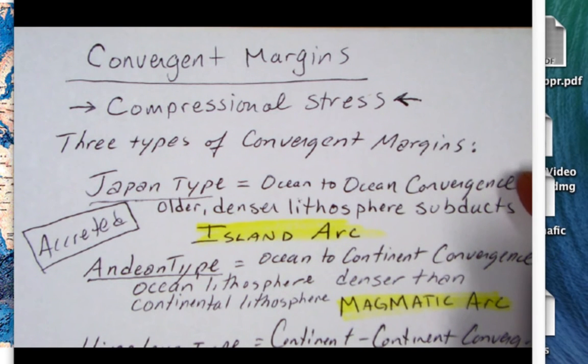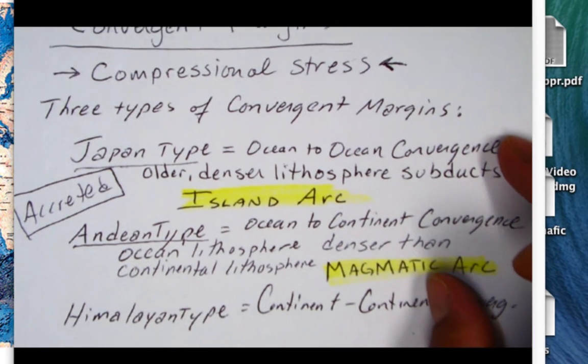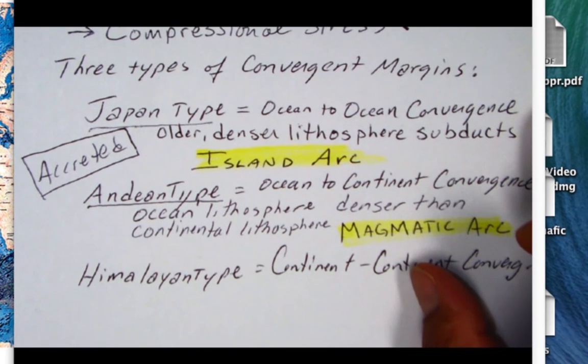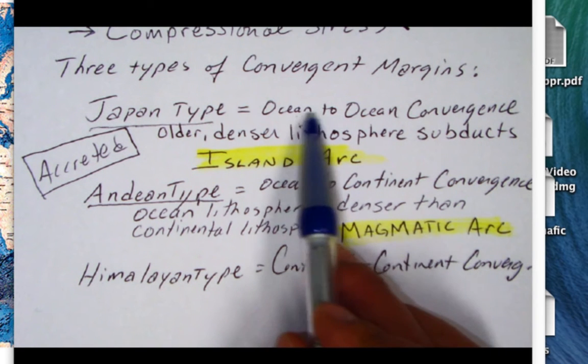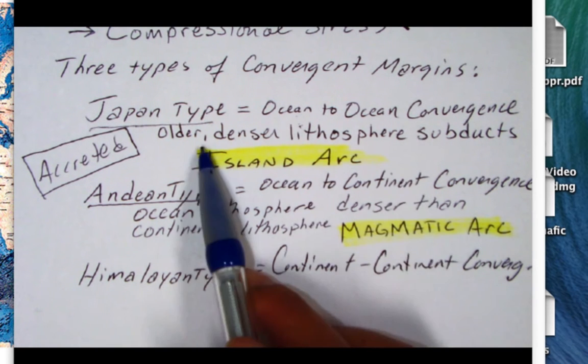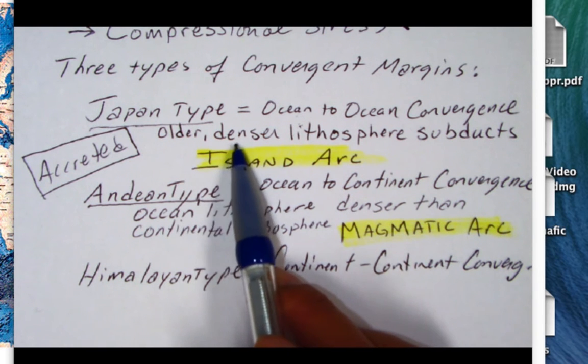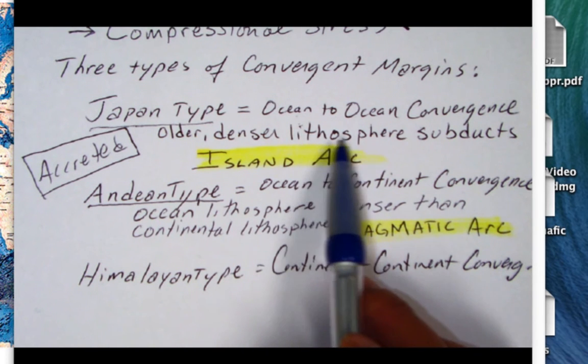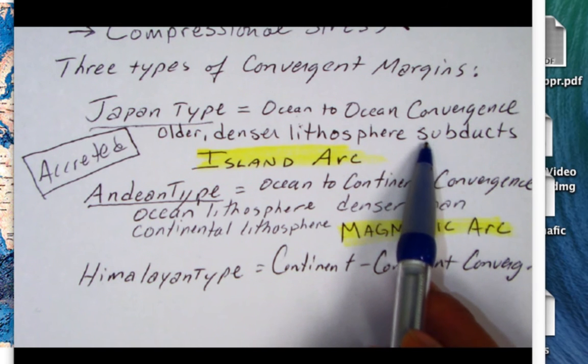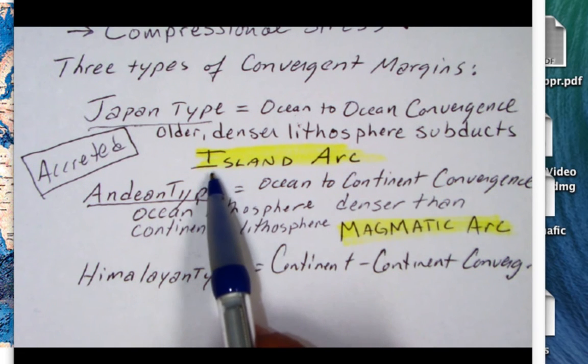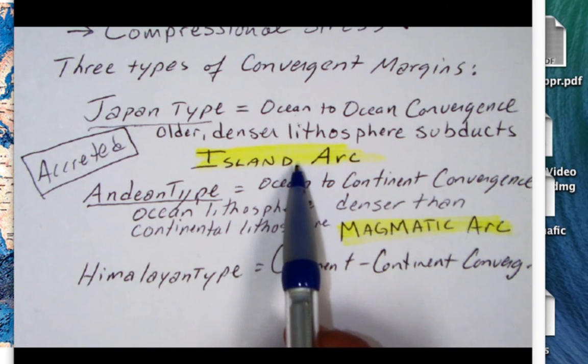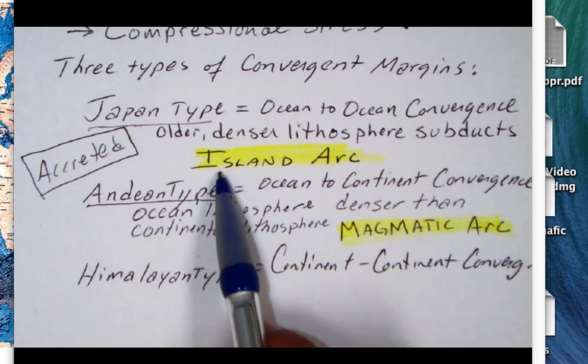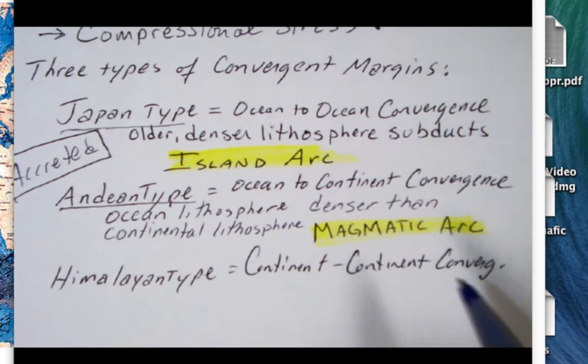We'll find that there are three types of convergent margins. The first one we term Japan-type, which involves two oceanic plates converging. We find that the older, denser tectonic plate is the one that's going to be pushed underneath or subducted. We use the name for those islands that form to separate them from Hawaiian-type islands. These islands are called island arcs, so Japan is a good example.